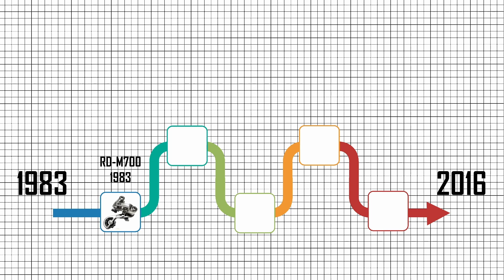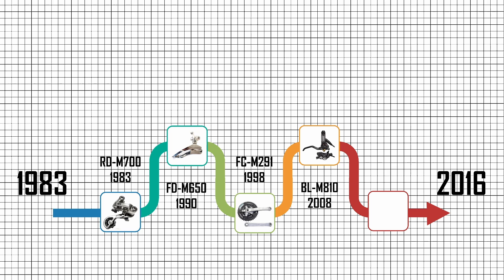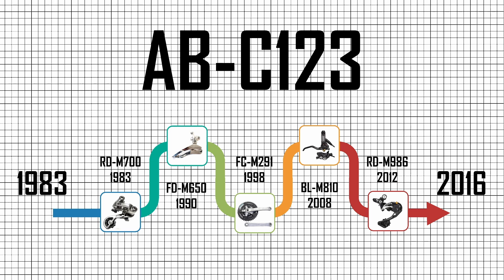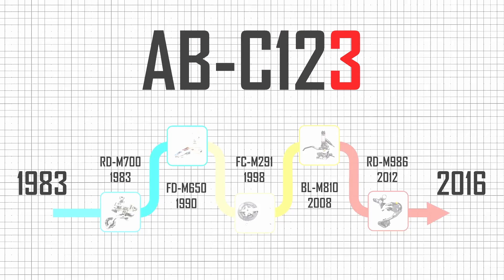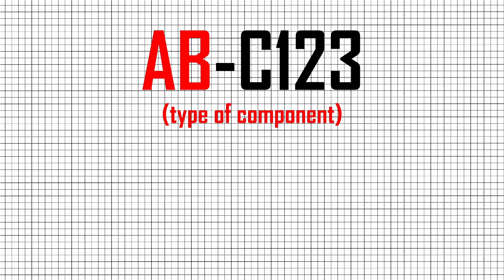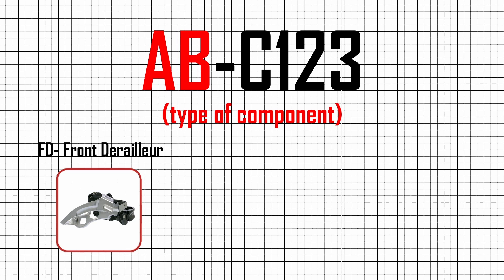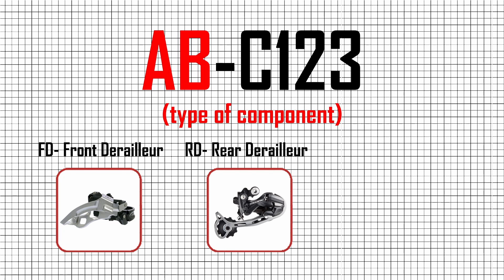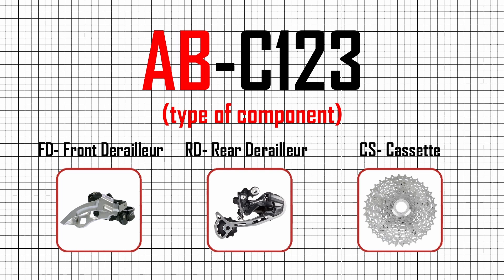Up until 2016, mountain bike, trekking, and non-series Shimano bike part codes would usually consist of three letters and three numbers: AB-C123. The first two letters, AB, indicate what type of component it is. For example, FD for front derailleur, RD for rear derailleur, CS for cassette.